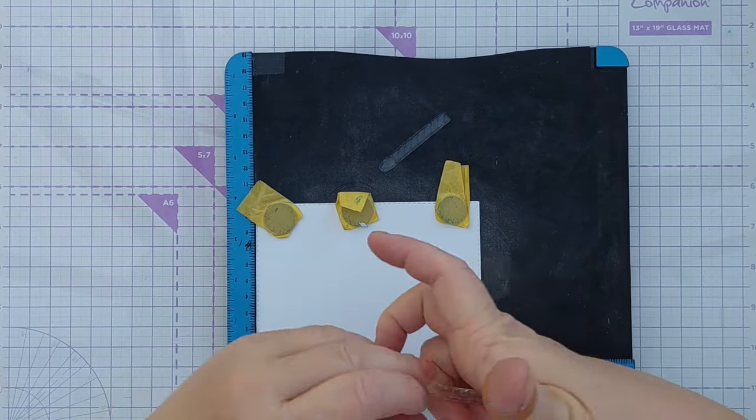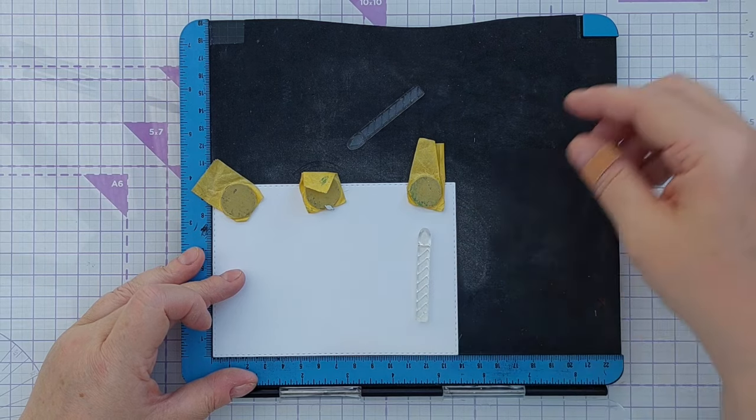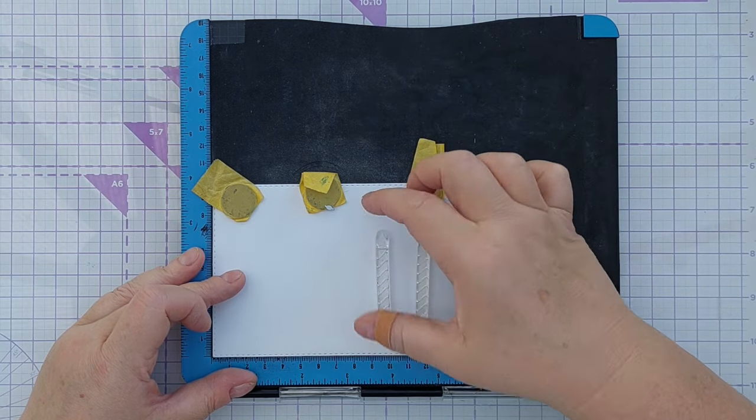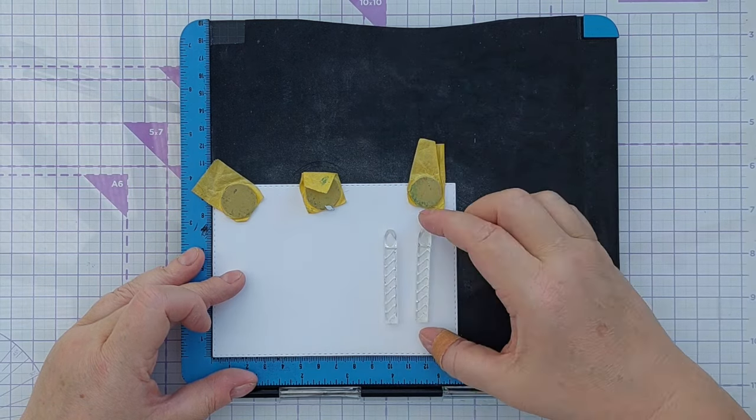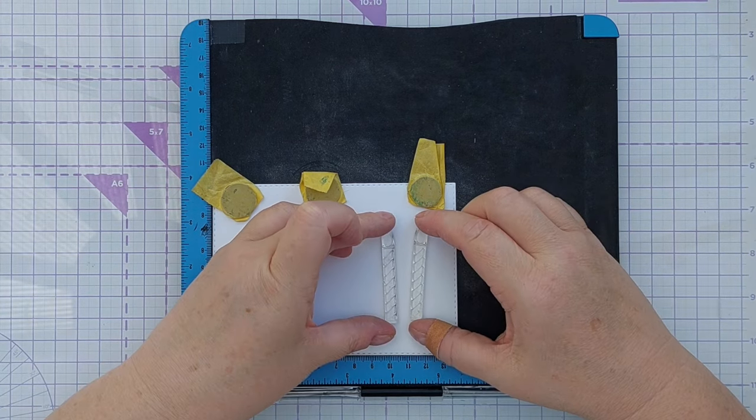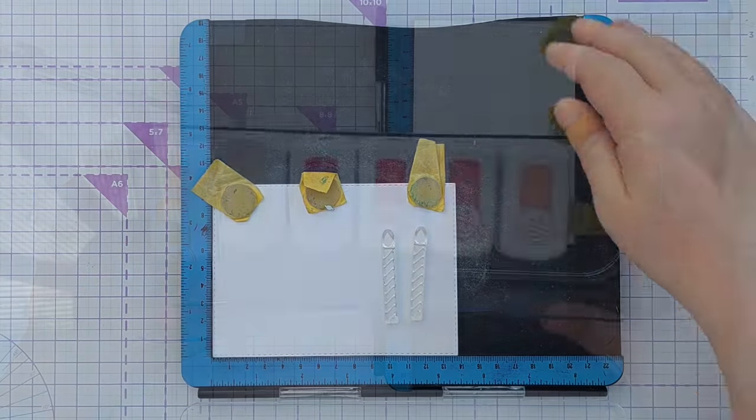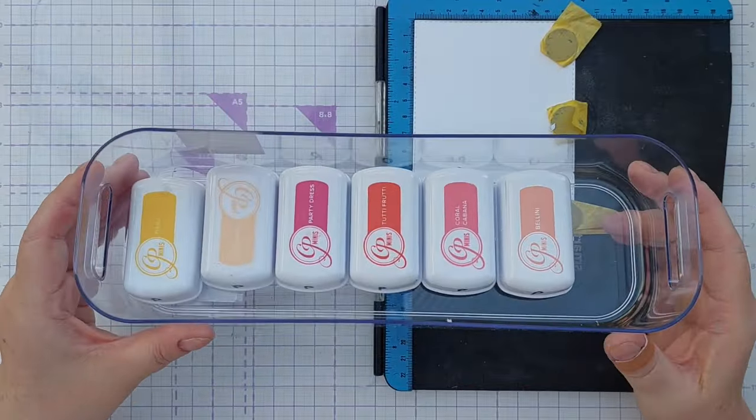So I've got a piece of smooth white cardstock, this is Bristol card, it's a nice white, it's the Windsor and Newton one. I popped it in my stamp positioner and I'm going to arrange my candles, just two of them here because we're going to do some repeat stamping. They're slightly wonky, they're not perfectly straight, but that's how I want them.